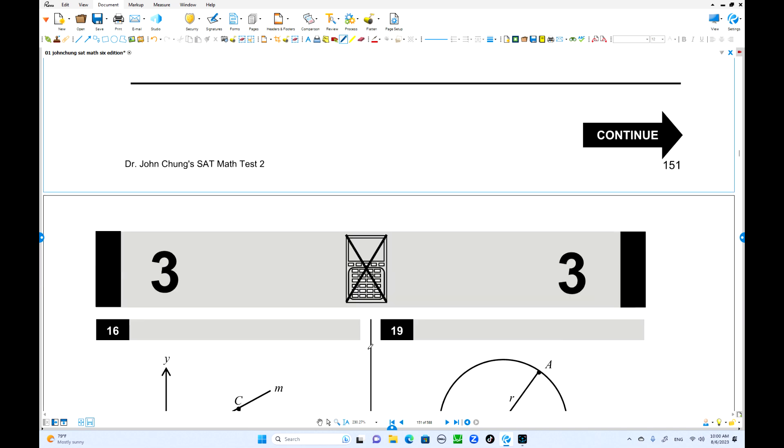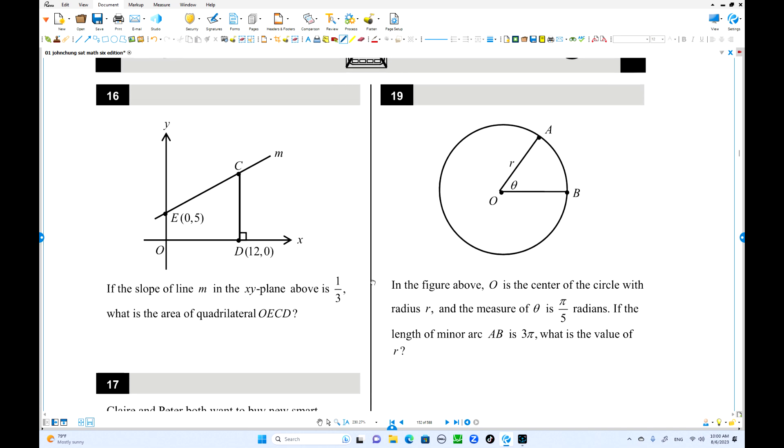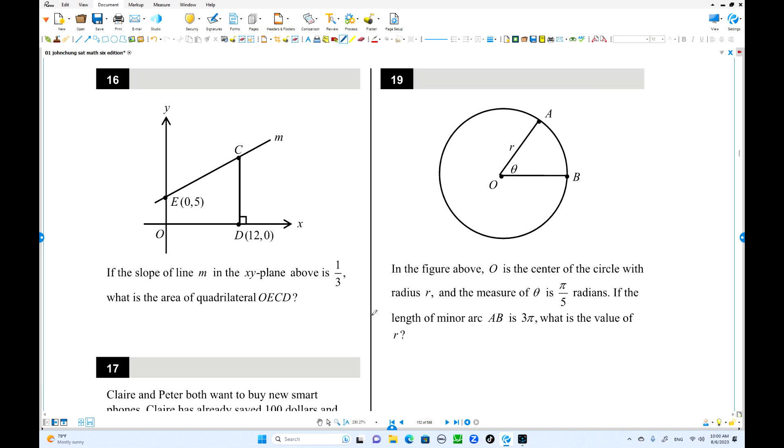Move to number 16. We have a line M with slope one third. So we're going to find the area of this one quadrilateral. You can divide this one into two: one is a triangle, then is a rectangle. That is the easiest way. Or you can use the way of the trapezoid formula. Base one, base two times this is the height. I'm going to go this way.